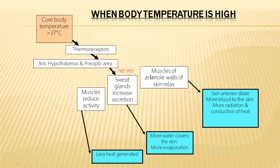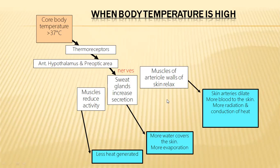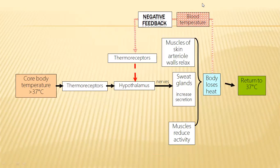When body temperature is above 37 degrees centigrade, thermoreceptors send information to the anterior hypothalamus — the preoptic area — where the thermostat receives the information. The hypothalamus sends signals through nerves to sweat glands to increase sweat secretion. More sweat means more water covers the skin, leading to more evaporation, which cools the skin. Nerves also signal muscles to reduce activity so less heat is generated, and signal muscles of skin arterioles to dilate, bringing more blood to the skin where excess heat is lost through radiation and evaporation.